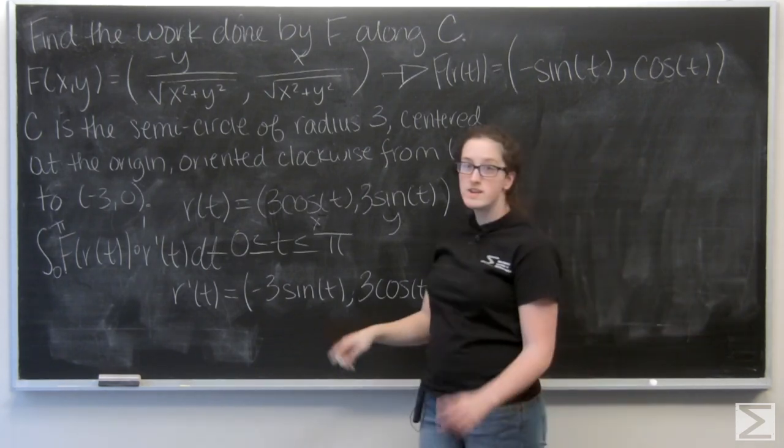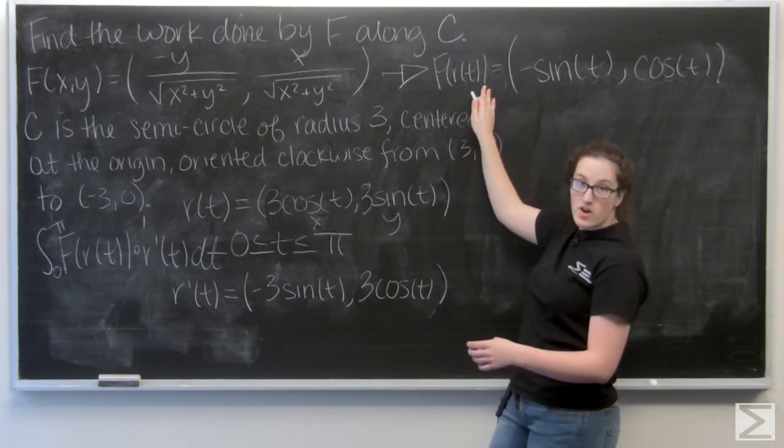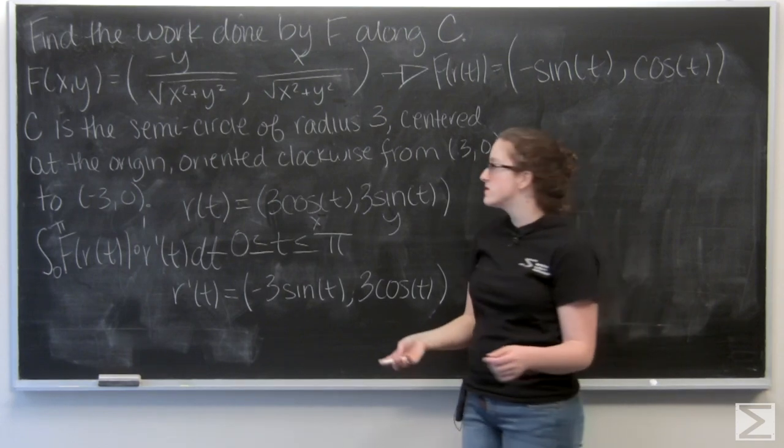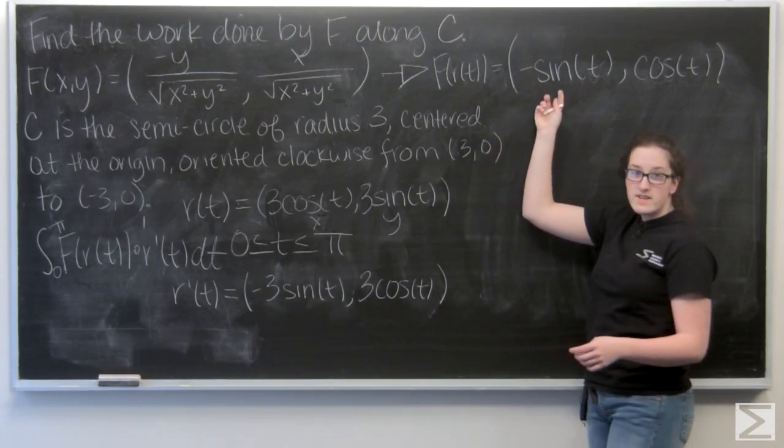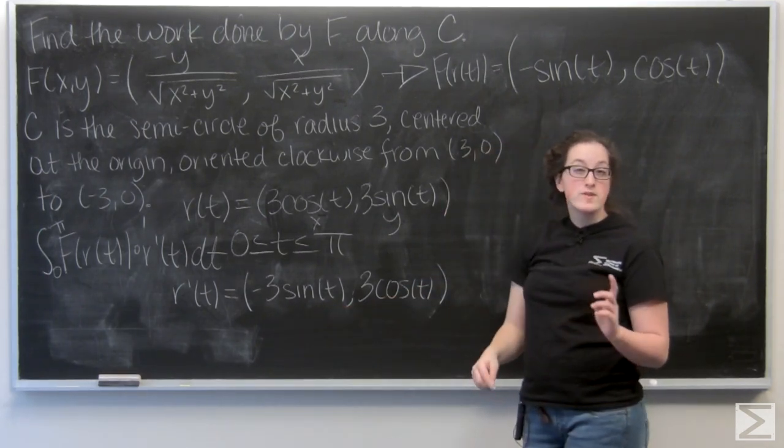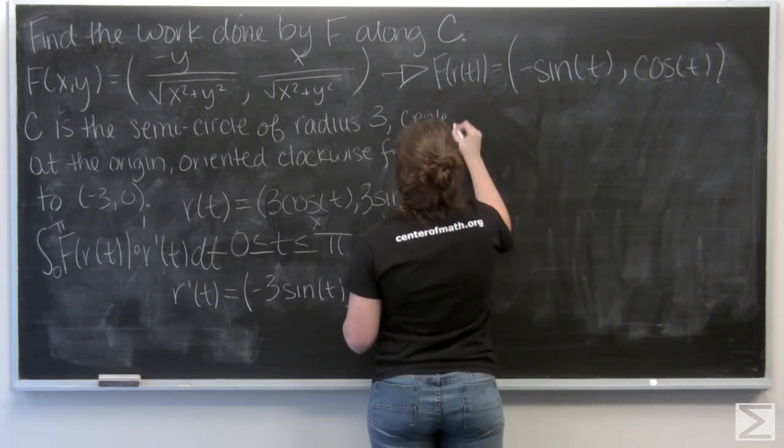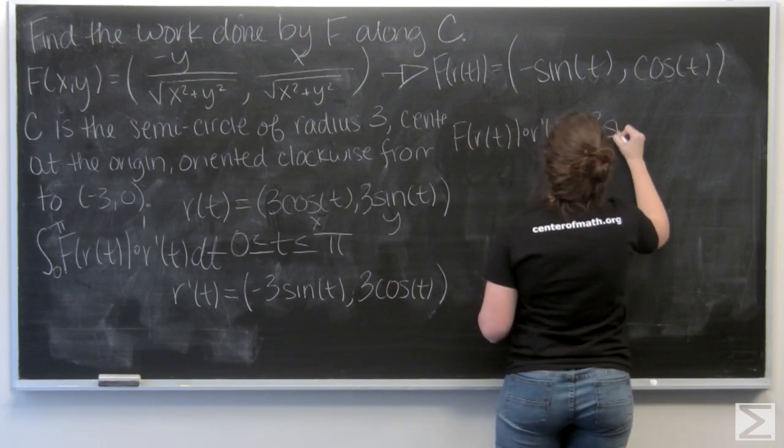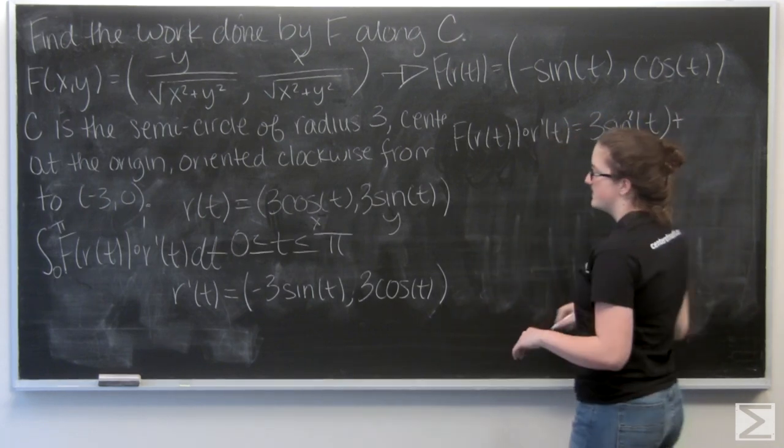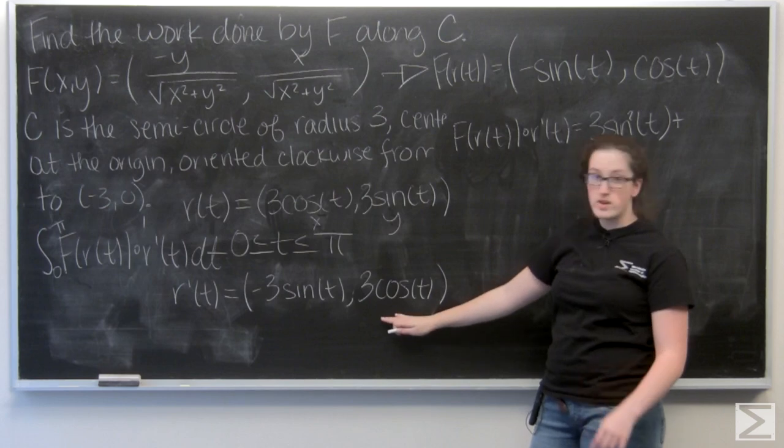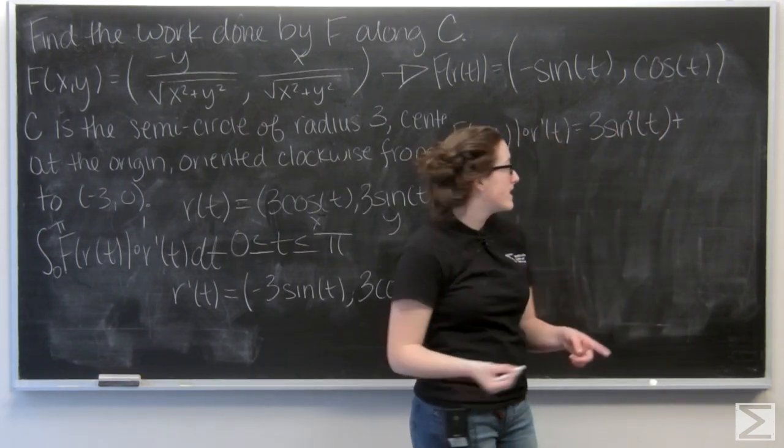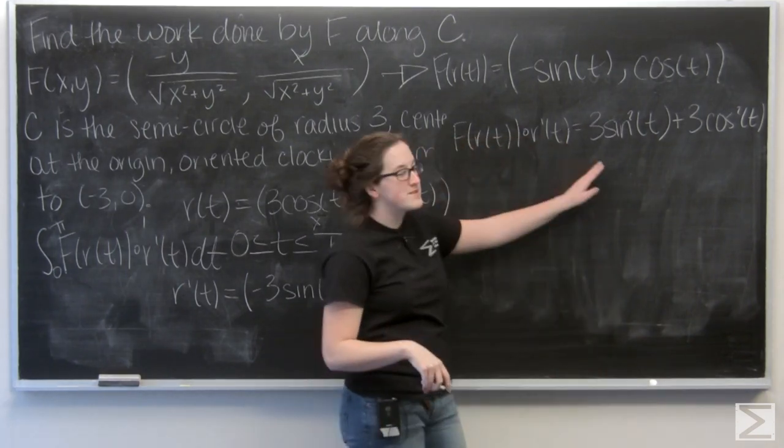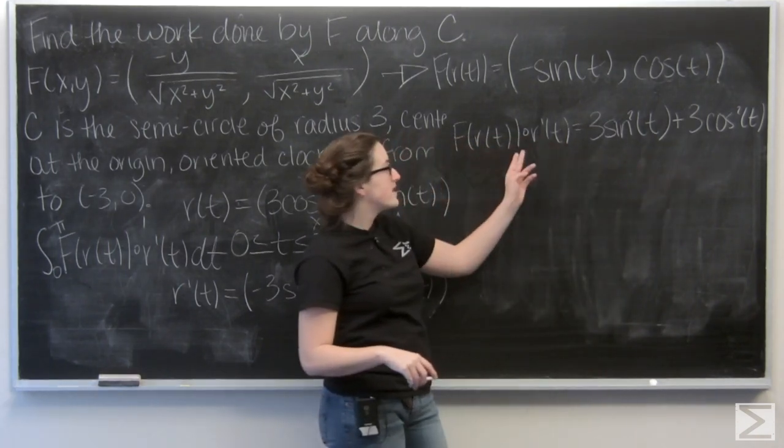Alright, so now I want to take the dot product of F(r(t)) and r'(t). So remember, that's just the product of the i components of the vectors plus the product of the j component of the vectors. So first off, I have -sine t times -3 sine t, which is 3 sine squared t. And then for the j component, I want to multiply 3 cosine t by cosine t. I get 3 cosine squared t. My favorite trig identity is back. Sine squared plus cosine squared equals 1. So this dot product is just going to be 3.